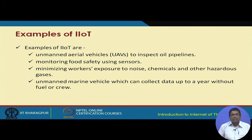Some examples of IIoT include the use of unmanned aerial vehicles or drones to inspect oil pipelines, monitoring food safety using sensors, and minimizing workers' exposure to noise, chemicals, and hazardous materials. Unmanned marine vehicles can be deployed to collect data throughout the year without any fuel or crew.